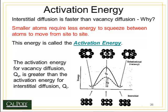In vacancy diffusion, an atom equal to the host atom size moves from one lattice position into the vacant lattice position adjacent to it. While it's moving, it's forced to push the other atoms out of the way, which causes a distortion to the local crystal lattice. This distortion raises the energy of the system, creating an energetic barrier to the movement of that atom from one position to the next. This energetic barrier is called the activation energy.